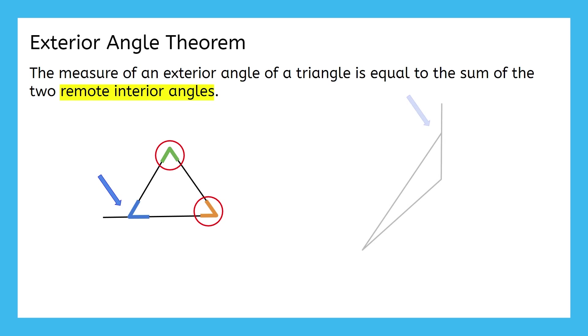How about this triangle? Which interior angle is adjacent to the Exterior Angle, and which two are remote? This angle is adjacent to the Exterior Angle, and these two are not touching the Exterior Angle, which makes them remote.